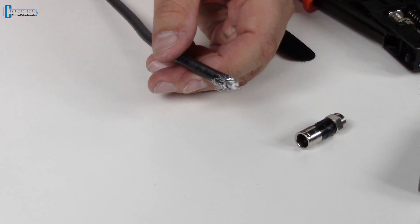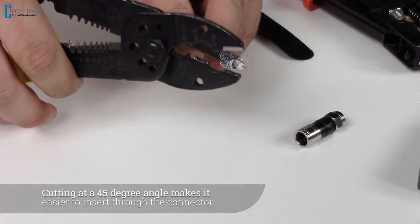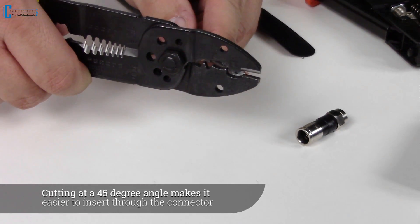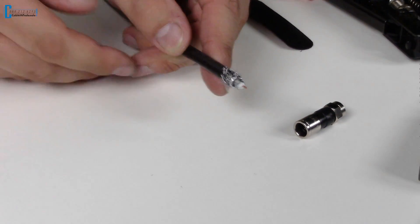Then, take a pair of wire cutters. You want to cut the tip at a 45 degree angle. Kind of like this. Perfect.